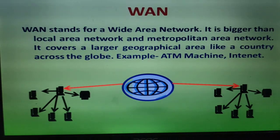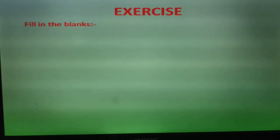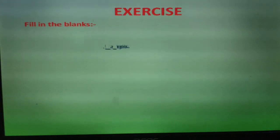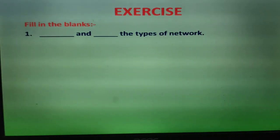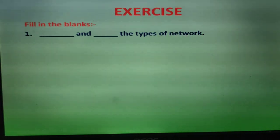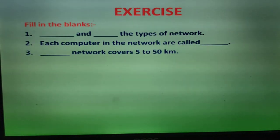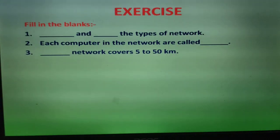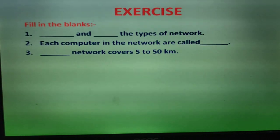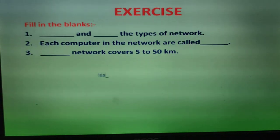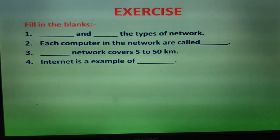After completing this topic, here is an exercise. Fill in the blanks: first, dash and dash are the types of network. Second, each computer in the network is called dash. Third, which network covers 5 to 50 km? Fourth, the internet is an example of which network?